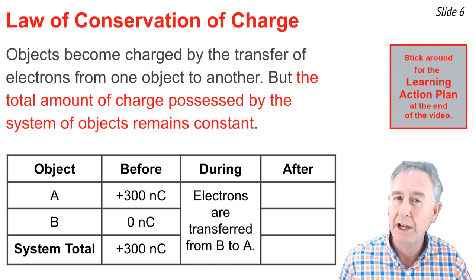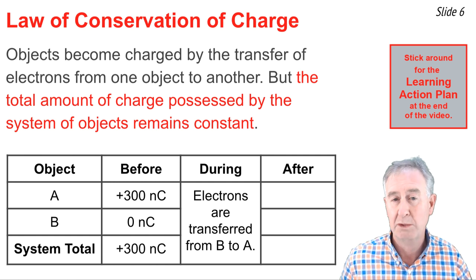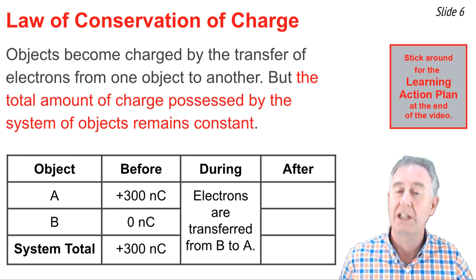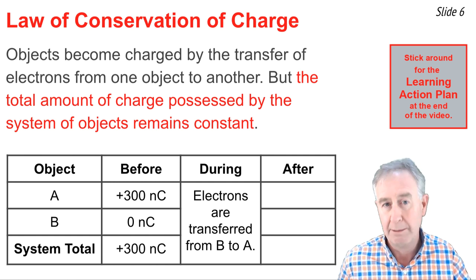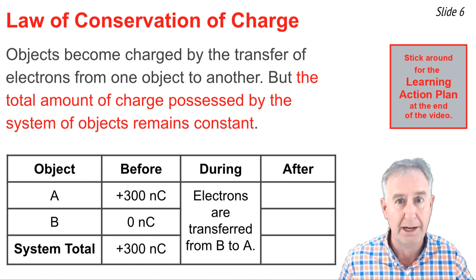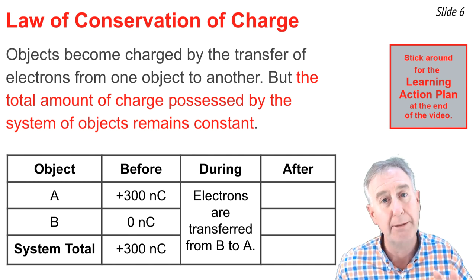Now, during the process, object B transfers electrons to A. And as we mentioned, when object B loses electrons, it becomes positive. And when object A gains those electrons, its amount of positive charge will go down.